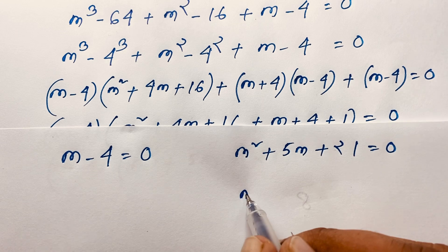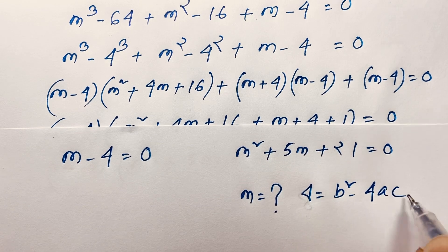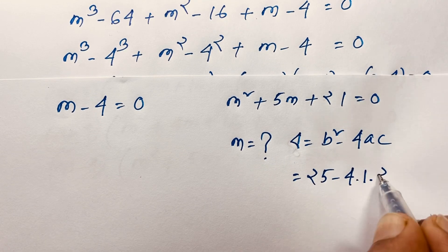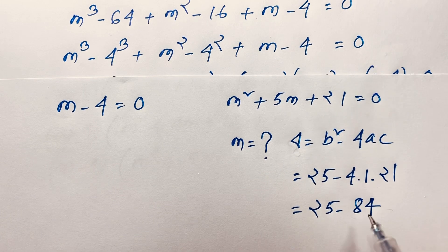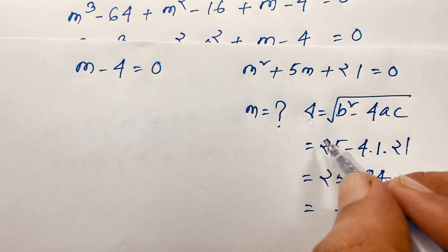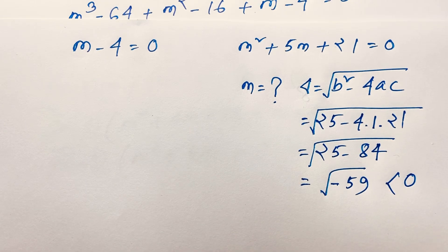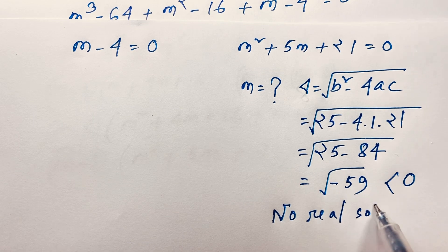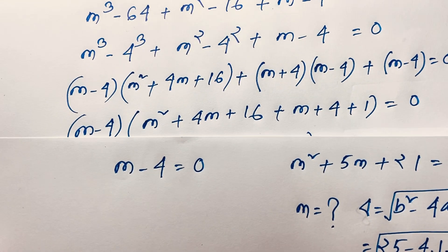For Case 1, m = 4. For Case 2, the discriminant is b² − 4ac = 5² − 4(1)(21) = 25 − 84 = −59. Since the discriminant is less than zero, there is no real solution from Case 2 — only complex solutions. So we use Case 1.